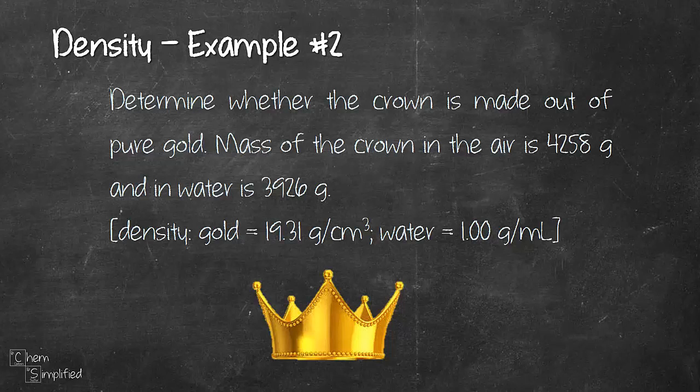And then we are also given two densities for our reference: one is for gold, and the other one is density of water. We're given the look of the crown, so it looks like a gold crown, and we're trying to figure out whether that's pure gold or not.